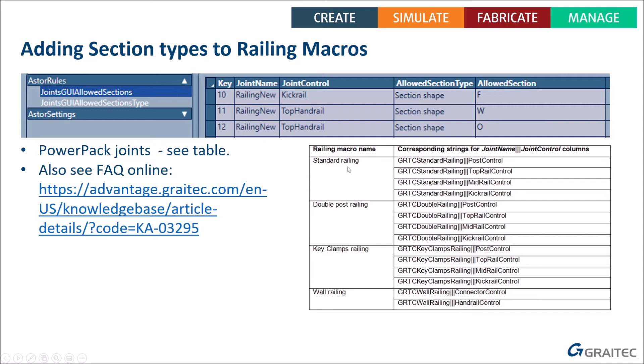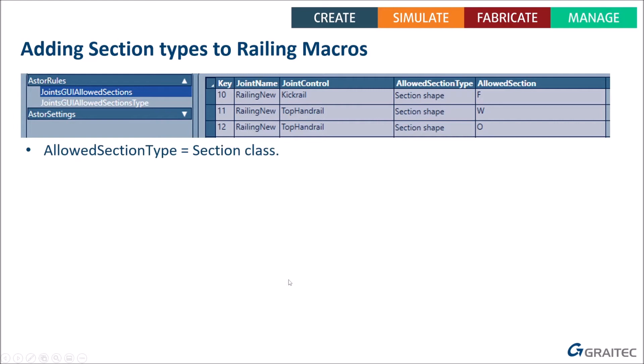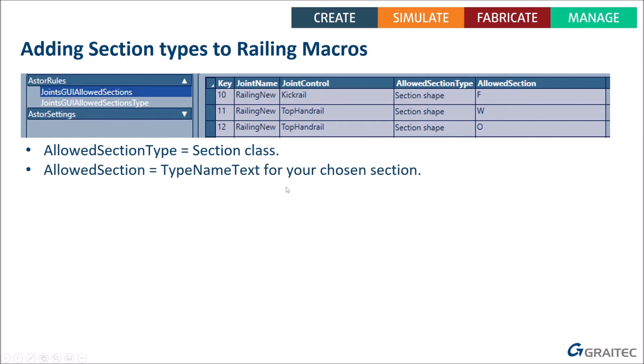For example, to add half-round bar to the standard Power Pack railing: add a new line with joint name 'Gratek Standard Railing' and joint control 'Top Rail Control'. For the Allowed Section Type column, it's a dropdown with two choices: 'Section Class' or 'Section Shape'. When adding your own specific type, always choose 'Section Class'. The last column, Allowed Section, requires the exact type name text for your section type.